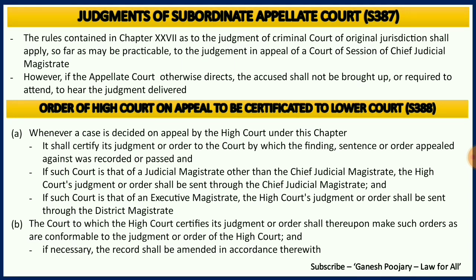Section 388 discusses about the order of the High Court on appeal to be certified to the lower court. Whenever a matter is decided by the High Court as an appeal, it shall certify its judgment or order to the court by which the finding, sentence or order appealed against was recorded or passed. If such court is that of a judicial magistrate other than the chief judicial magistrate, the High Court's judgment or order shall be sent through the chief judicial magistrate, and if such court is that of an executive magistrate, it shall be sent through the district magistrate. The court to which the High Court certifies its judgment shall make such orders as are conformable to the High Court's judgment, and if necessary the record shall be amended accordingly.